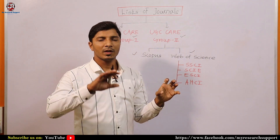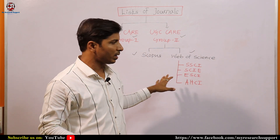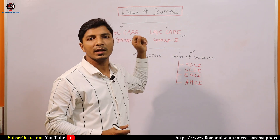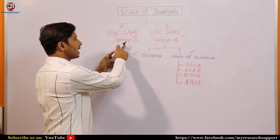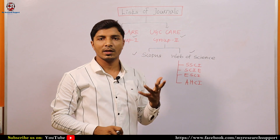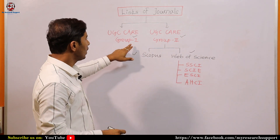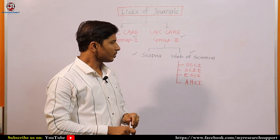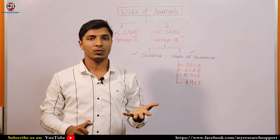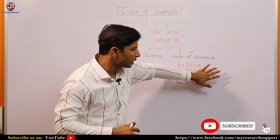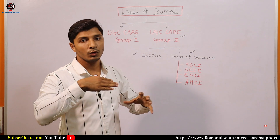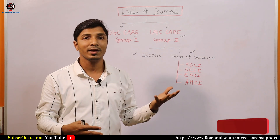If you publish a research article in a Scopus-indexed journal or a Web of Science-indexed journal, by default your article will be published in a UGC CARE listed journal. However, if you publish in a Group 1 journal, it is neither Scopus nor Web of Science indexed. So it is a little simpler to publish in a Group 1 journal compared to a Group 2 journal.